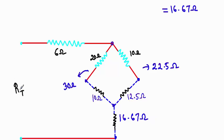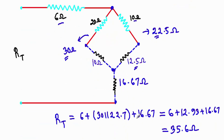Now to calculate RT, look at these terminals. The 20 ohm and 10 ohm resistances are in series, giving 30 ohm. The 10 ohm and 12.5 ohm resistances are also in series, giving 22.5 ohm. These 22.5 ohm and 30 ohm resistances are then in parallel, and their parallel combination is in series with the 6 ohm and 16.67 ohm resistances.